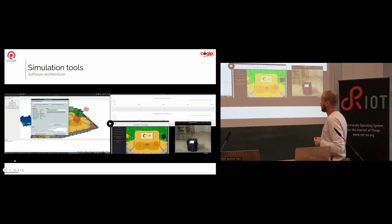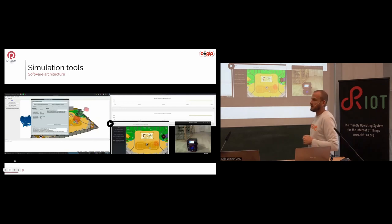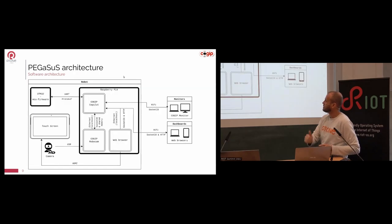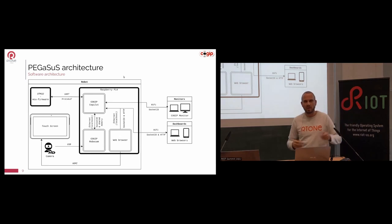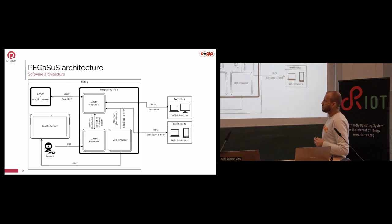You can see the accuracy with a PID control loop. Here is the firmware and robot architecture. RIOT is in the top left corner on the STM32 with our MCU firmware — that's the name of our firmware — and it communicates through UART and Protobuf messages with the copilot, which runs on the Raspberry Pi 4.